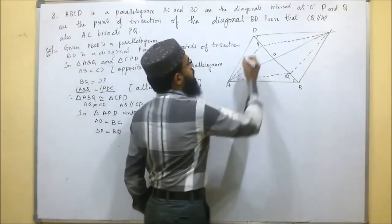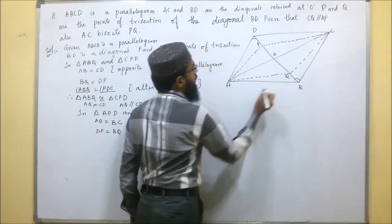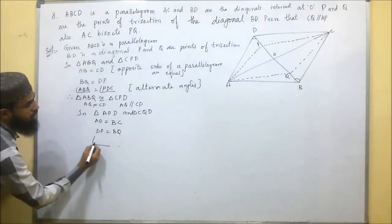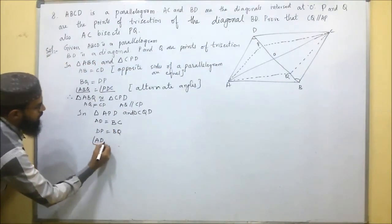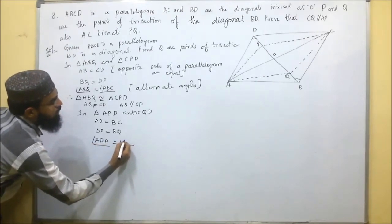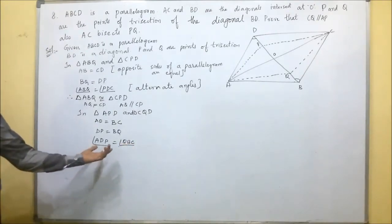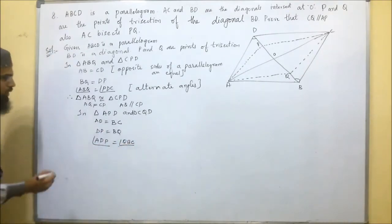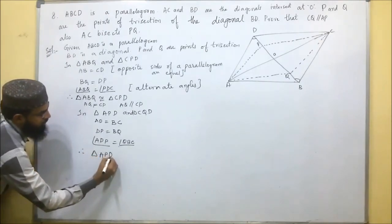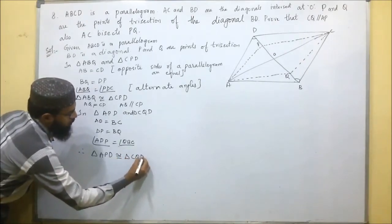Looking at the angles: angle ADP is equal to angle QBC, since these are alternate angles formed by the parallel sides. Therefore, triangle APD is congruent to triangle CQD by SAS congruence.